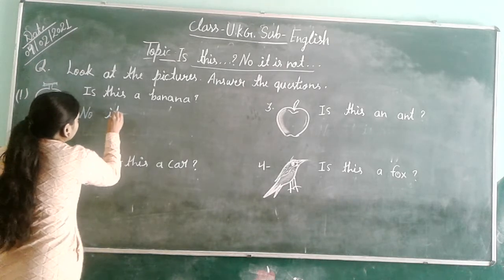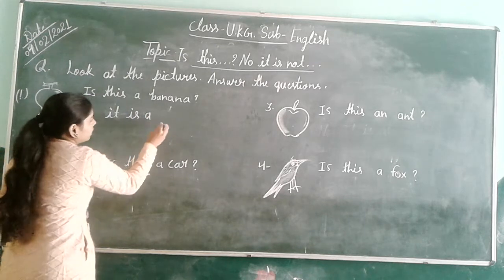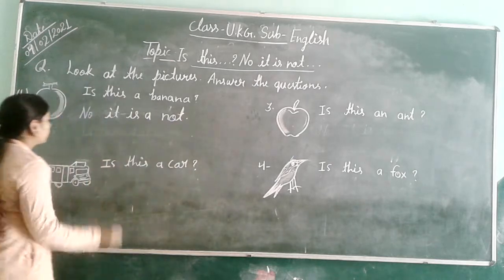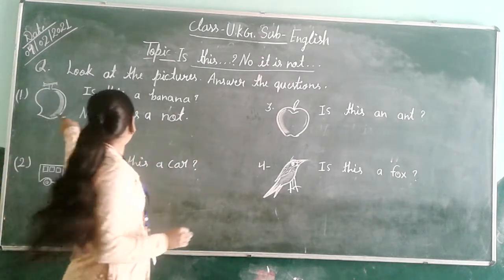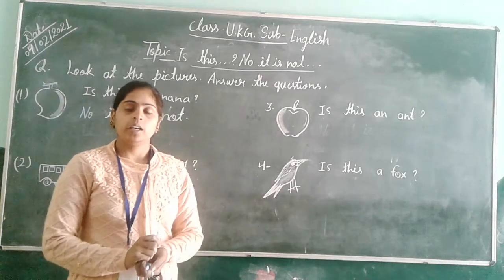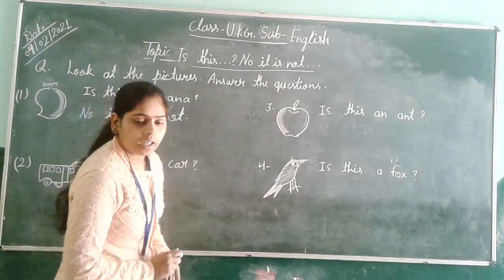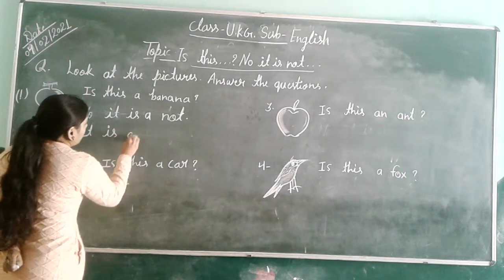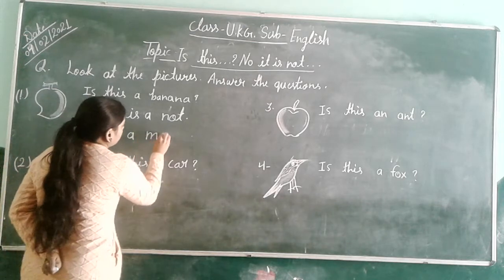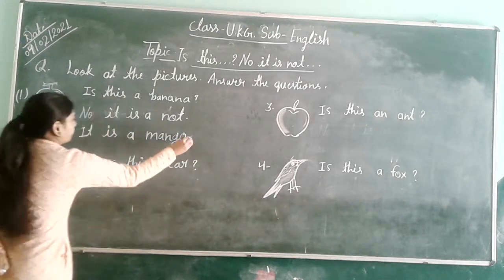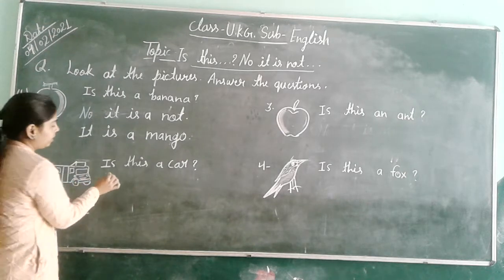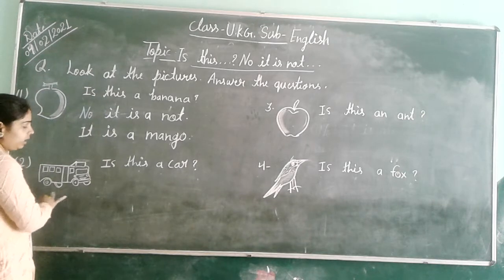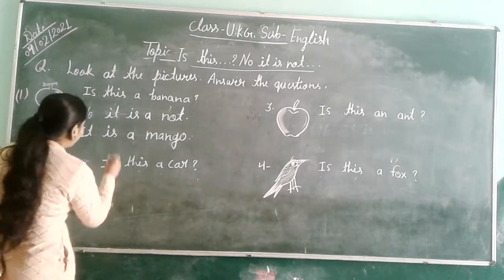It is a... OK, we are right back. This is the picture of the mango. You can write it. It is a mango. Now the question number is second. This is a car. This is a picture of the mango. Car is a mango. This is a picture of the mango.